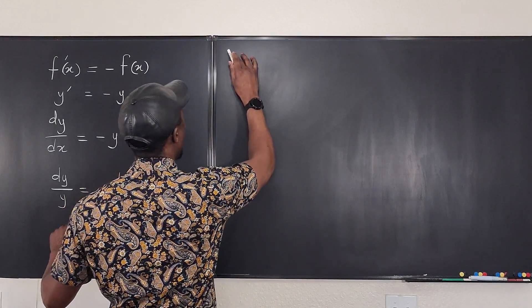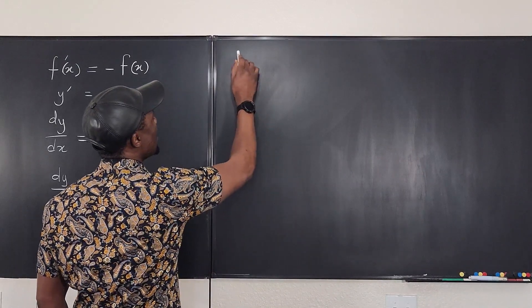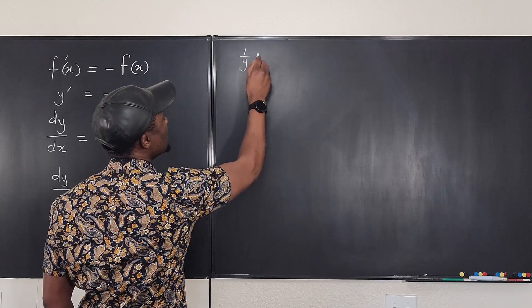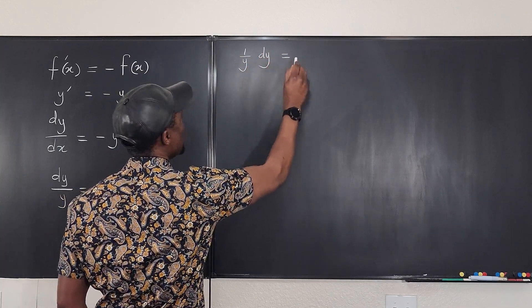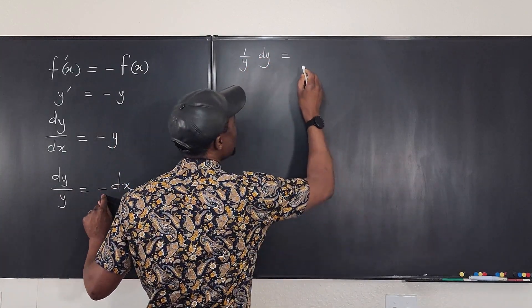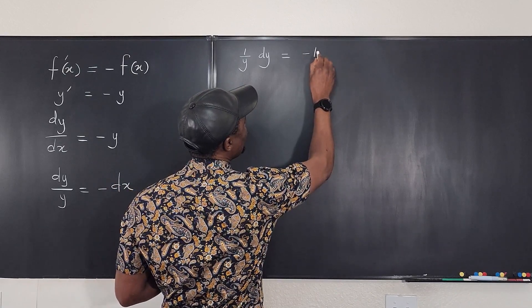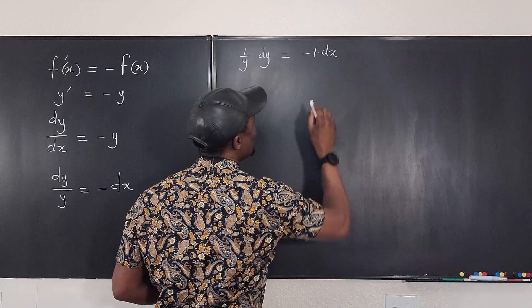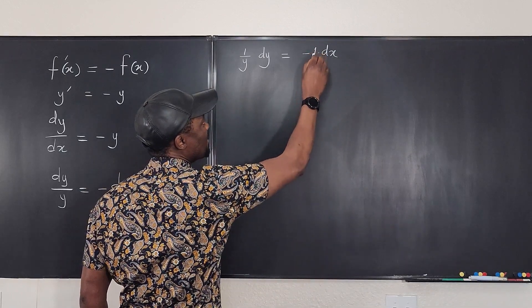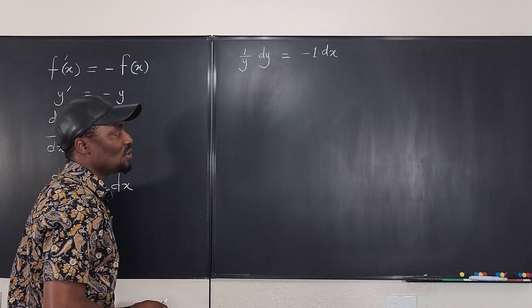What if we wrote this as, say, one over y times dy will be equal to, instead of writing negative here, I'm going to write negative one times dx, just so you can see it. So, let's say there's an invisible one that was sitting here, but I didn't write it.